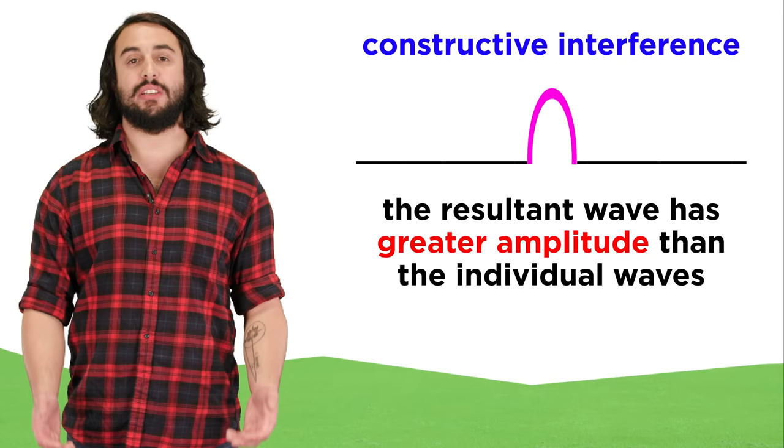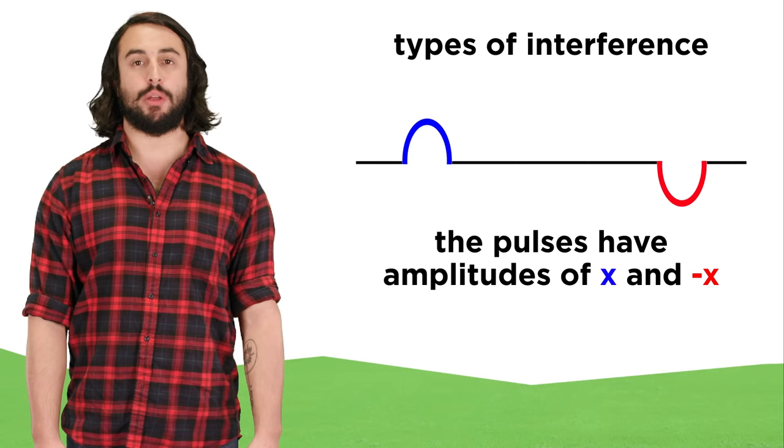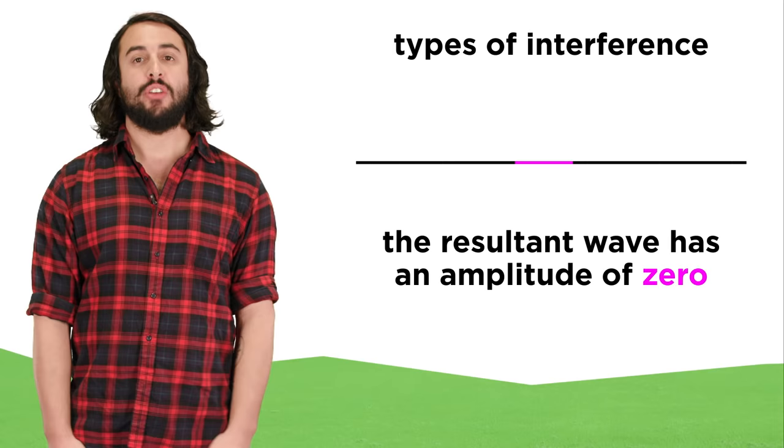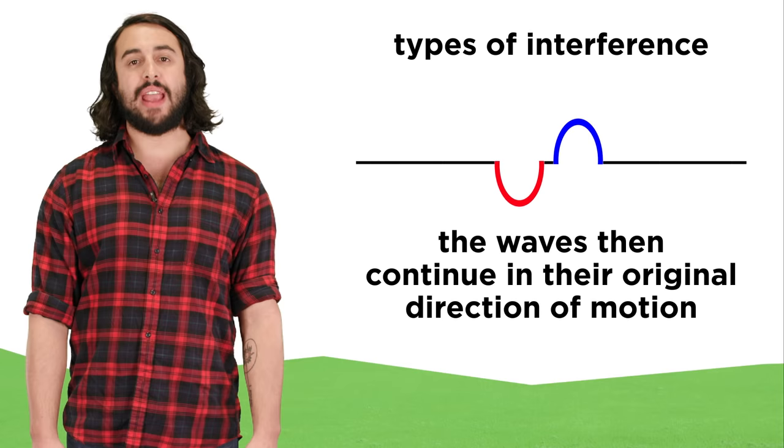Now let's say the pulses are on opposite sides of the equilibrium position. Again, according to the superposition principle, we will add the amplitudes to get the resultant wave, but in this case the two amplitudes add to zero, so the resultant wave will be as though there is no wave at all. Then the waves continue along their trajectories.